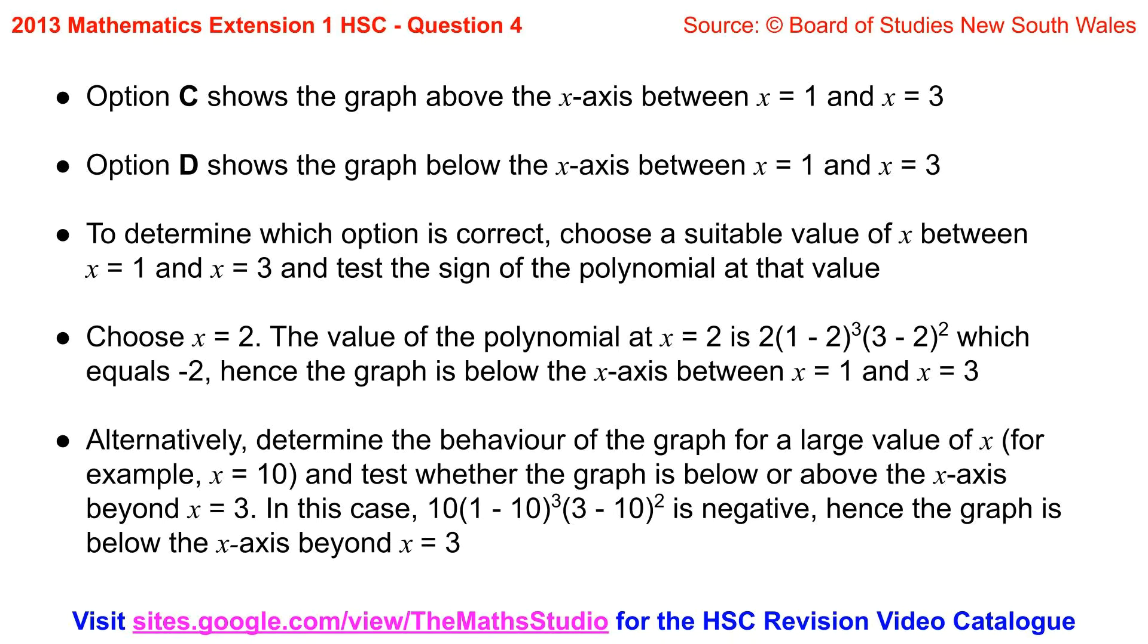To determine which option is correct choose a suitable value of x between x equals 1 and x equals 3 and test the sign of the polynomial at that value. In this case we're going to choose x equals 2.